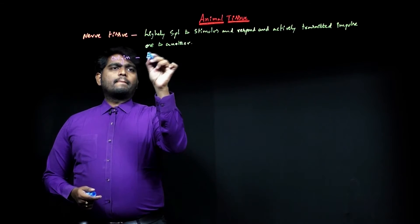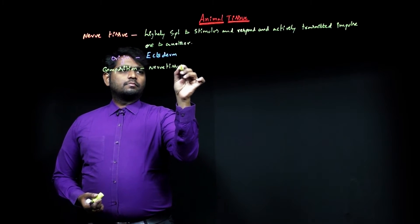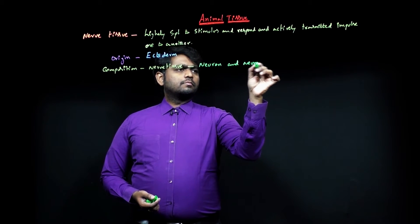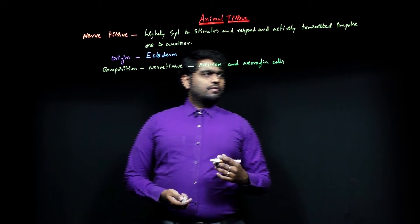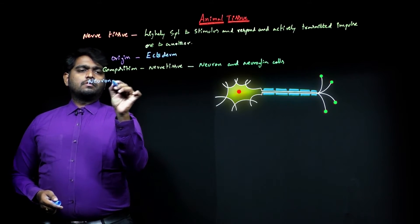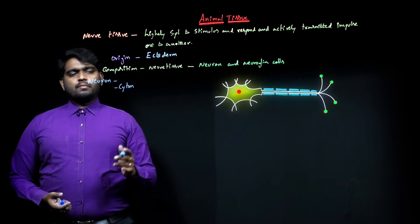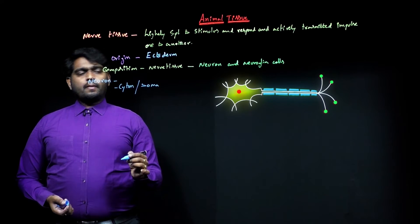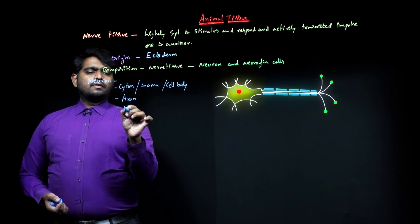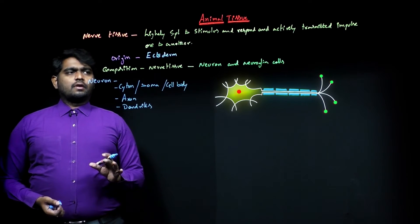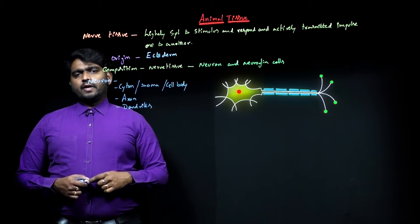Origin of nerve tissue: ectoderm. Composition of nerve tissue: neuron and neuroglia cells. Very important is neuron structure. The neuron is composed of cytone—cytone means cell body, also called soma—and also axon part with axon filament and dendrites. Nerve tissue means combination of neuron and neuroglia cells. Neuroglia cells are astrocytes, oligocytes, and microglia cells.